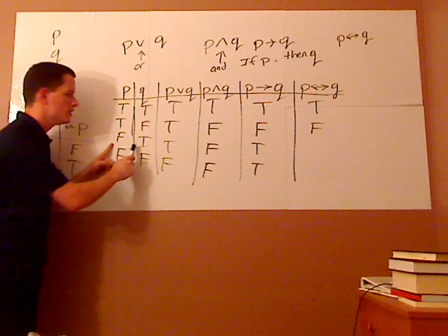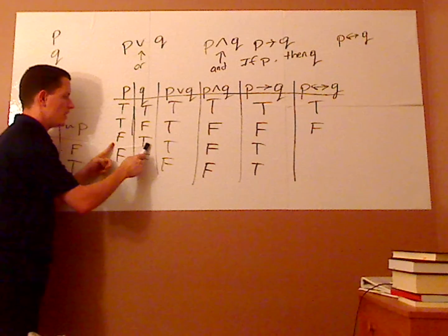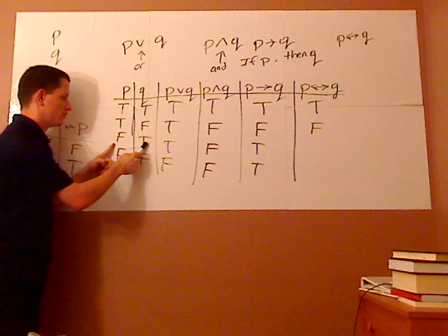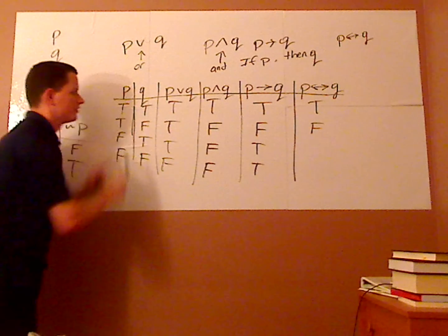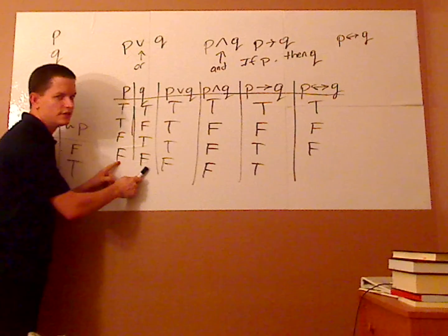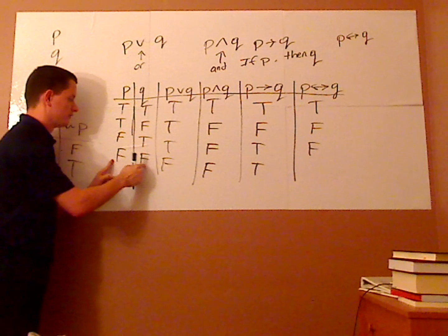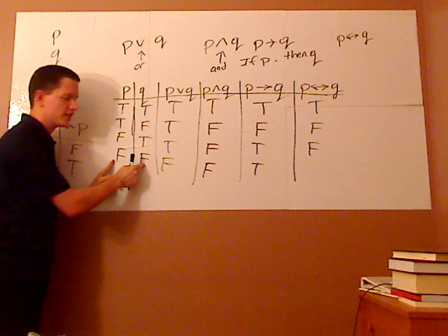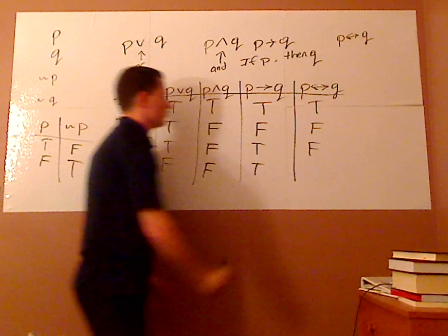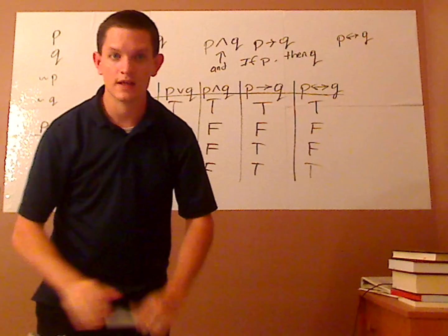The same thing happens with false and true: even though going from P false to Q true gives a true implication in one direction, going the other direction — if Q is true and P is false — that gives false, so the biconditional is false. Finally, if both P and Q are false: going one direction, if false then false is true, and going the opposite direction, if false then false is also true. So false and false gives a true biconditional.